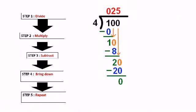Let me give you an example. Here 100 is divided by 4. Our first step is divide, so we divide by 4. The first digit is 1.